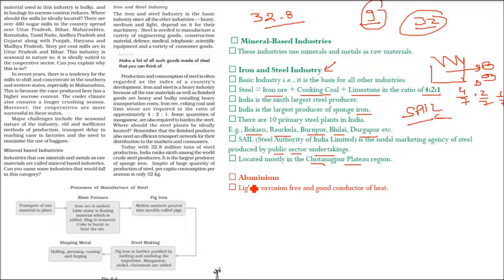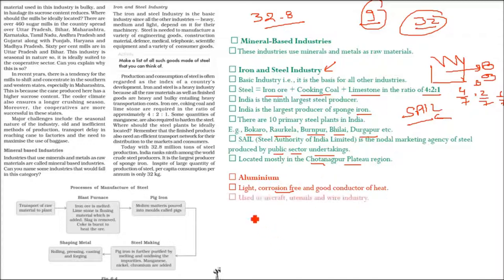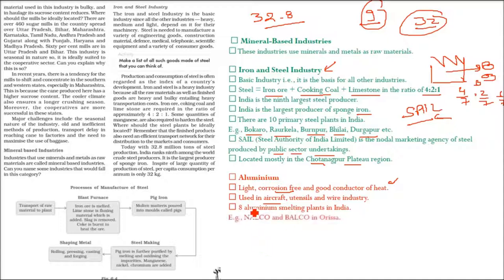Aluminium comes from bauxite ore. Aluminium is light, corrosion-resistant, a good conductor of heat, malleable, and ductile. It is used in aircraft, utensils, and wire industries. There are aluminium smelting plants in India — Nalco and Balco are in Odisha. In 1950, China and India were producing the same amount of steel, but China is now the largest producer and consumer. In 2004, India was the largest exporter of steel before China overtook us.